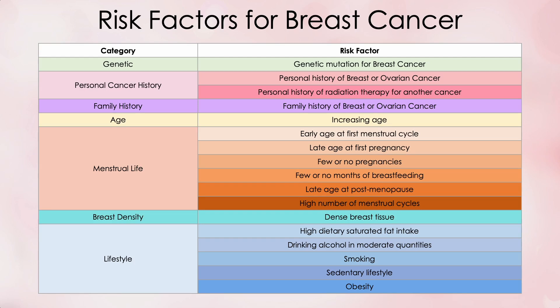What I want to do today is simply present this whole list and divide it into categories that will set the stage for how I address these factors in future videos. So let's get right to the long list of risk factors for breast cancer. Here we have our chart of risk factors. In the column on the left, I've divided them into seven categories: genetic, personal cancer history, family history, age, menstrual life, breast density, and lifestyle. And in the column on the right, I've listed the individual risk factors and color coded them according to the category to which they belong.